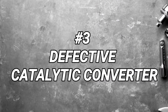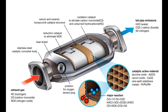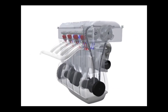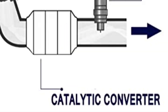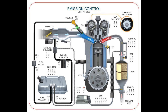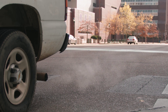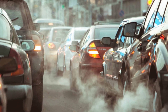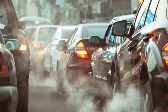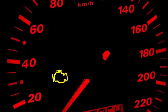Defective catalytic converter. The catalytic converter converts harmful gases into less harmful emissions. If it fails, it can cause an increase in emissions and a decrease in engine performance. A problematic catalytic converter can cause the check engine light to turn on, because it is an important component of the vehicle's emissions control system. Its job is to convert harmful exhaust gases, such as carbon monoxide and nitrogen oxide, into less harmful gases before they are released into the atmosphere. If the catalytic converter is not functioning properly, it can cause an increase in harmful emissions, which can trigger the check engine light and set off an error code related to the emissions control system.